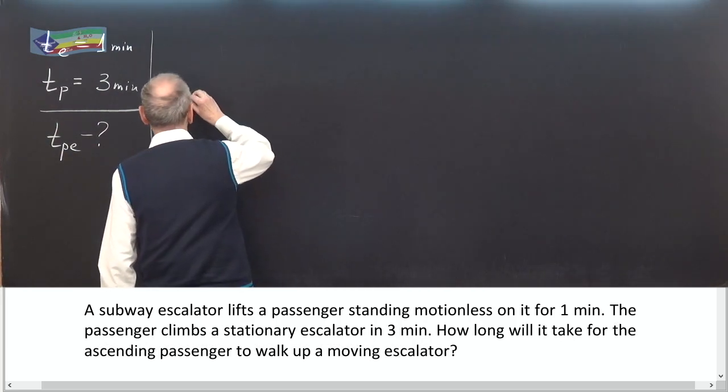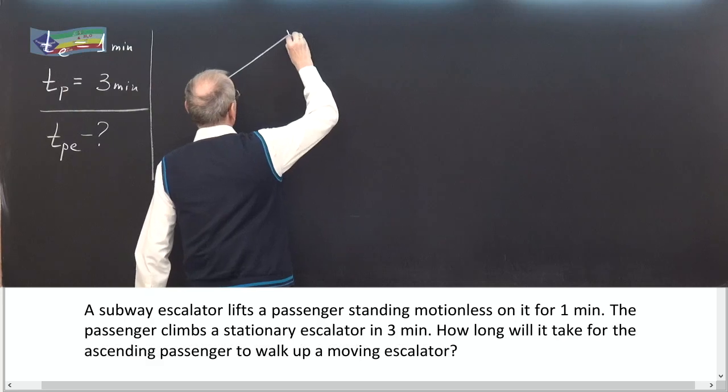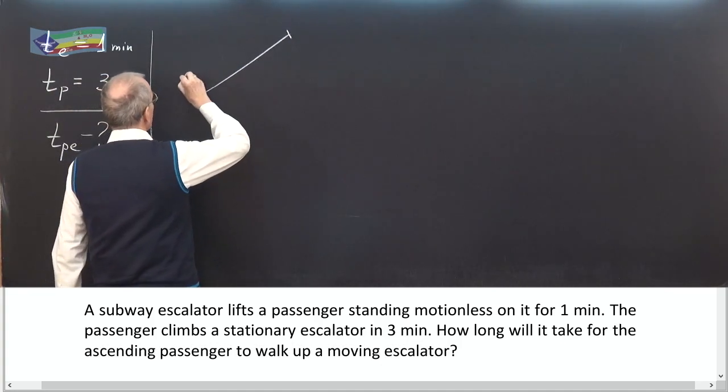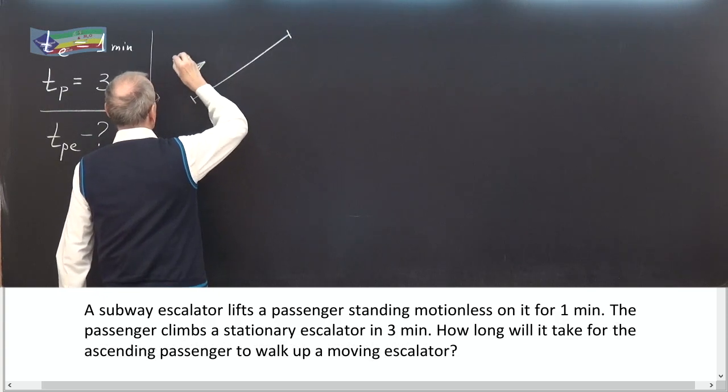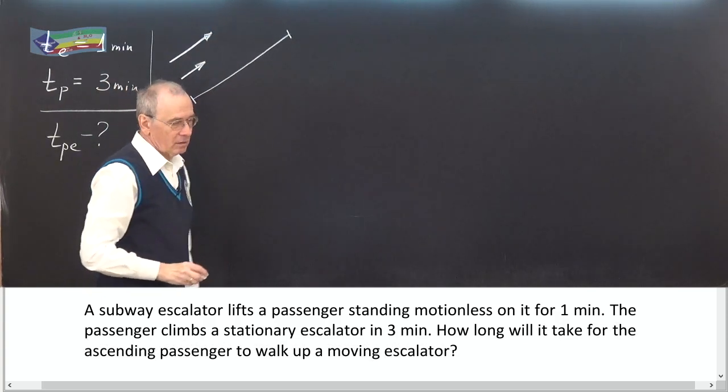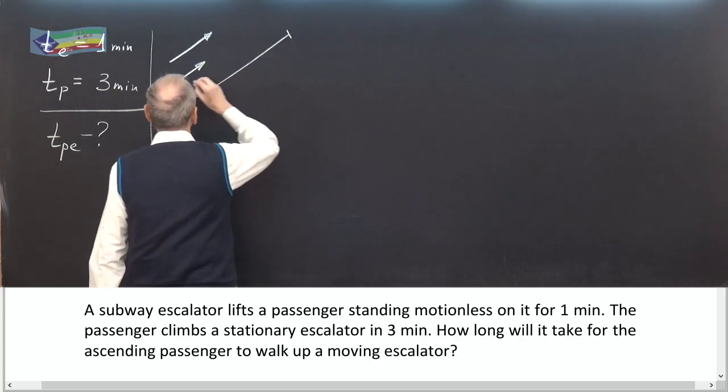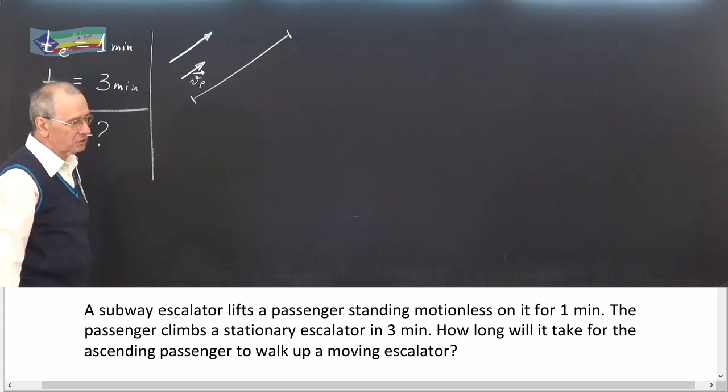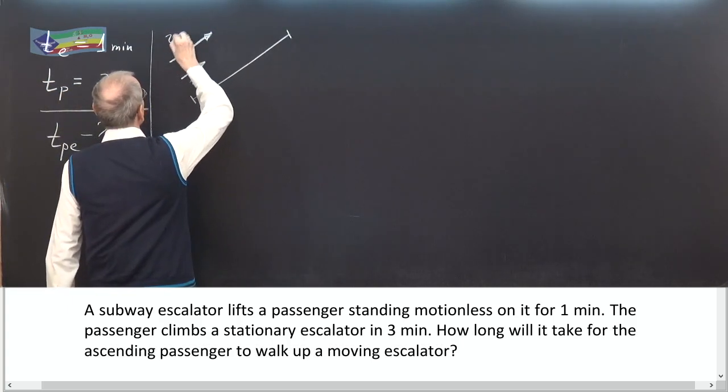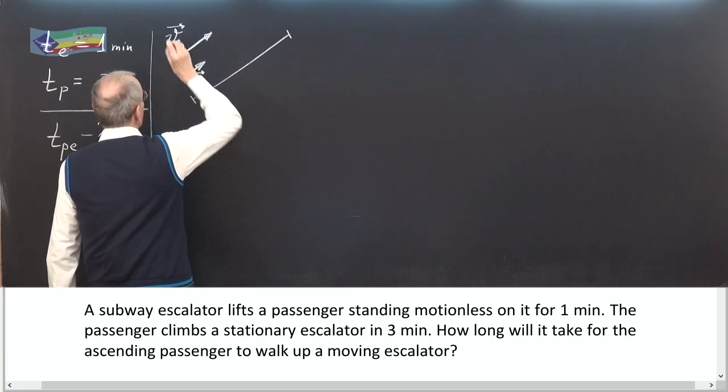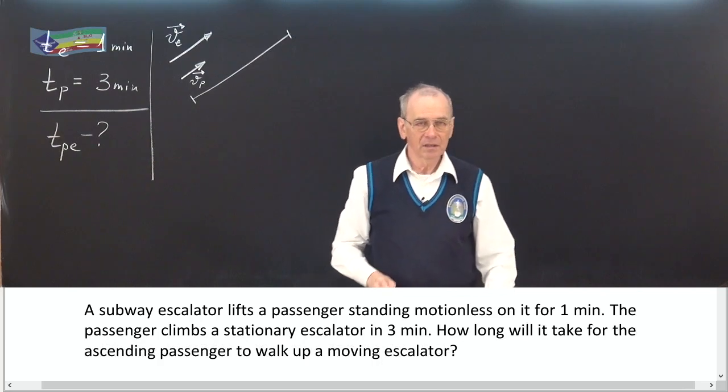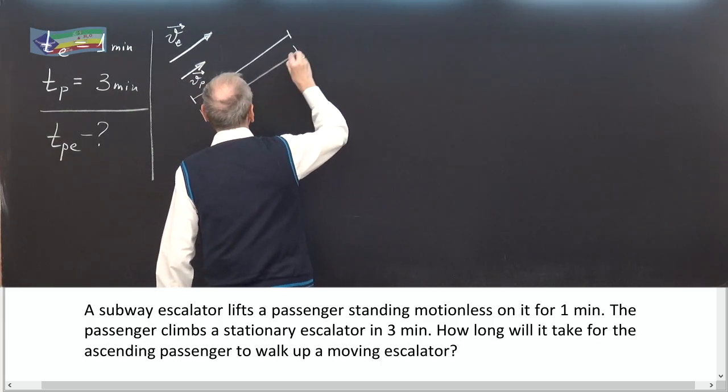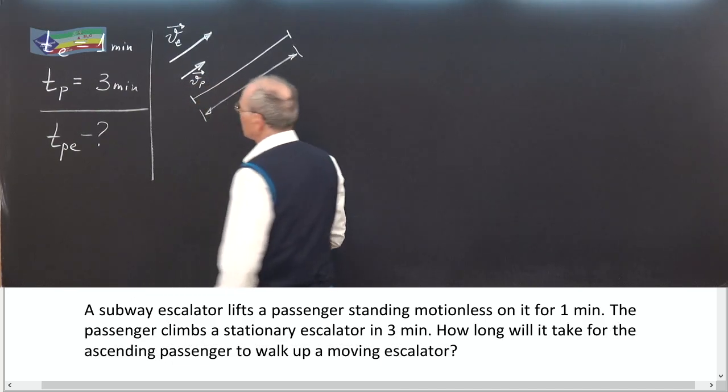Let's make a picture. An escalator. Both passenger and escalator move upward. Let V passenger is the velocity of passenger, Vp. Let V escalator is the velocity of the escalator. And now let L is the length of the escalator.